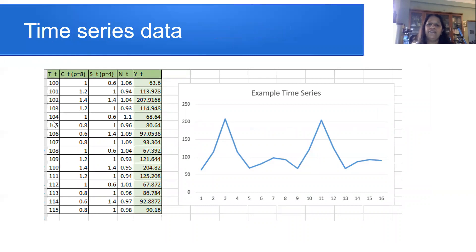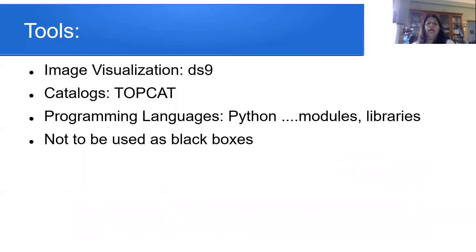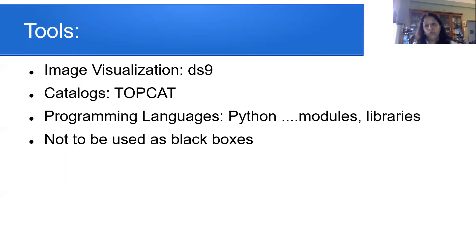You could also have time series data — for example, a variable source whose brightness changes every day. This could be in tabulated form showing how brightness changes over various days: your Y(t) time series data. We will also be talking about visualization tools: the simplest image visualization tool is DS9; for catalogs there is TopCat; and for programming, Python is essentially what is used today. We'll have special sessions on Python covering modules, libraries, and how to use Python for astronomy data — but these tools must not be used as black boxes.